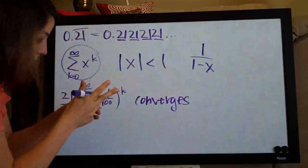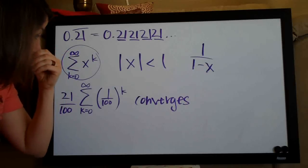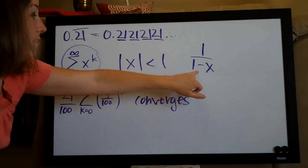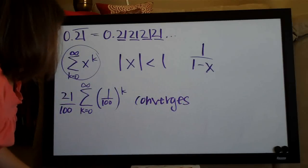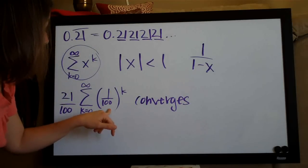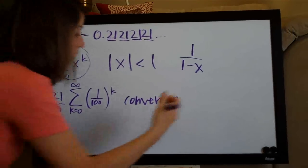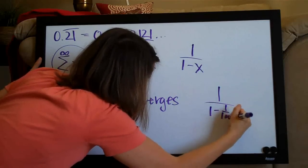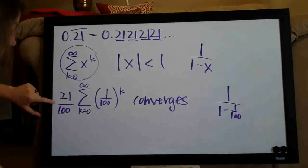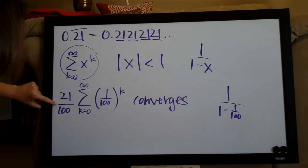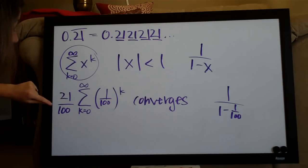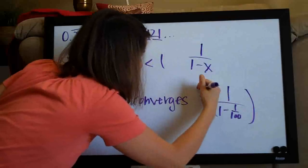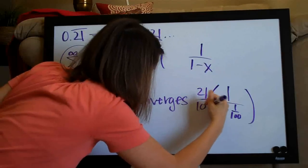Since the series converges, we need to find the sum using the formula one over one minus x. With x equal to one over one hundred, we write: one over one minus one over one hundred. But don't forget about our twenty-one over one hundred — since that is multiplied by the whole series, we have to multiply it out in front.